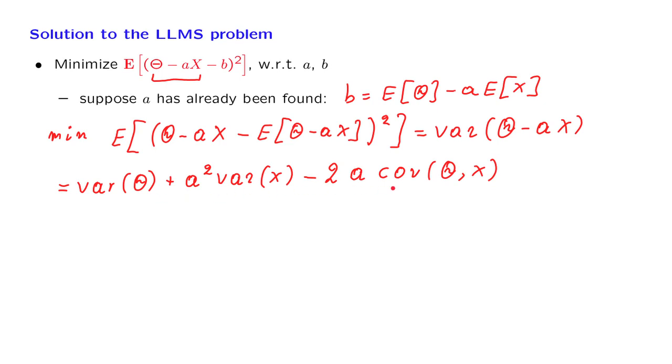This is the quantity we want to optimize with respect to a. And to do this optimization, we just set the derivative with respect to a to 0.